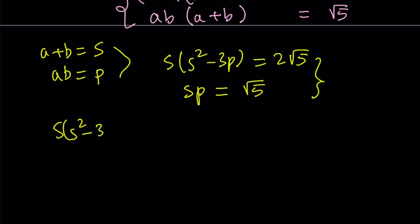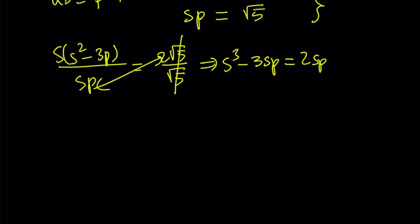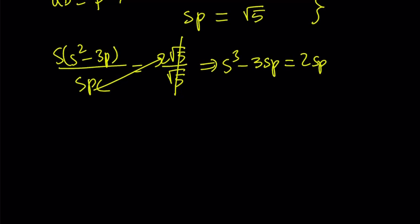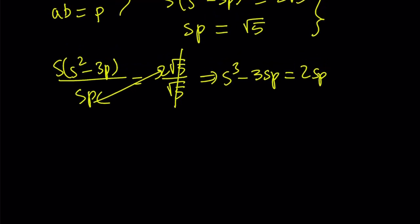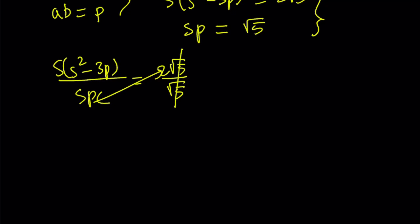We're going to divide this equation by this one. On the other side, we have 2√5 divided by √5. Square root of 5 is going to cancel out, leaving us with 2. Actually, we forgot to do one thing here. Can s be 0? Well, s is a+b. If a+b is 0, then both quantities are going to be 0. So it's impossible, in other words, a+b cannot be 0. So s does not equal 0, and we can cancel out the s.